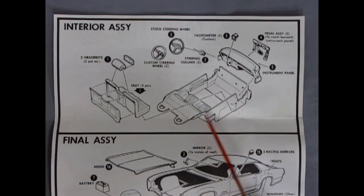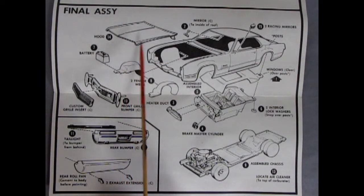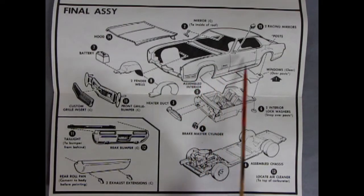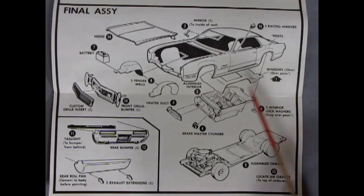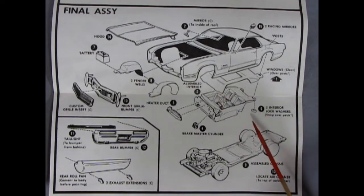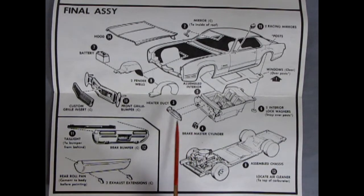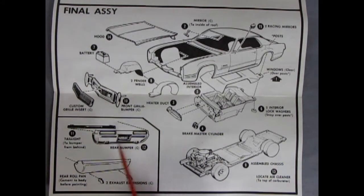Then we get into our final assembly steps with our big long hood and our body. There's a post underneath which will go through your windshield or your tail shield windows whatever, and then your interior tub pops in and it's got these two locking washers that will click all this together. Then we've got our brake master cylinder and our heater duct popping onto the firewall which is molded onto that interior bucket, our two fender wells, our battery, and the front grille and bumper. And then there's a custom grille insert you can pop in there too if you don't like the stock.